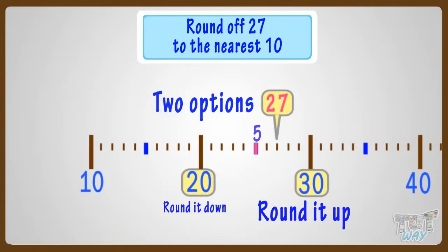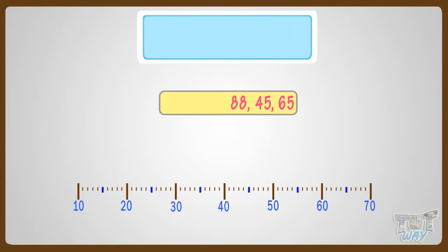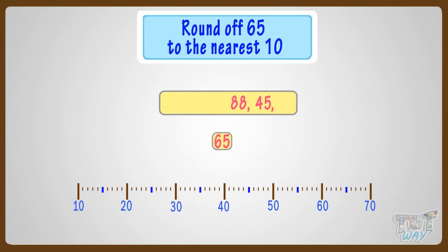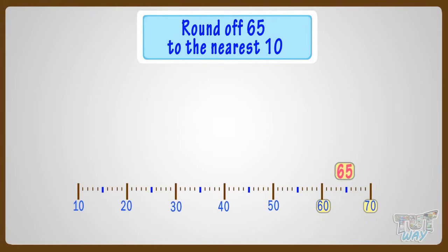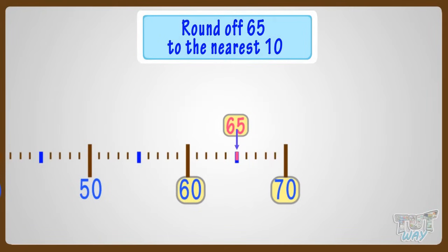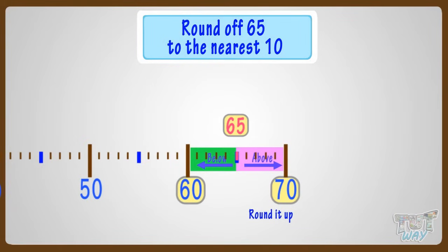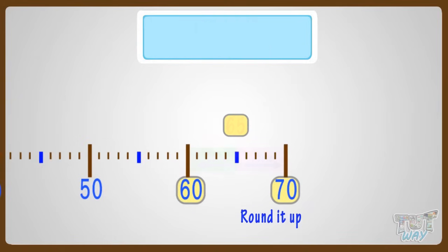Now let's take another example. We have to round off 65 to the nearest ten. Where can you fit 65 on this number line? It is exactly between the two numbers 60 and 70 — it is on the five mark. We know if the number is on the five mark or above the five mark, we round it up. So we will round it up to 70.